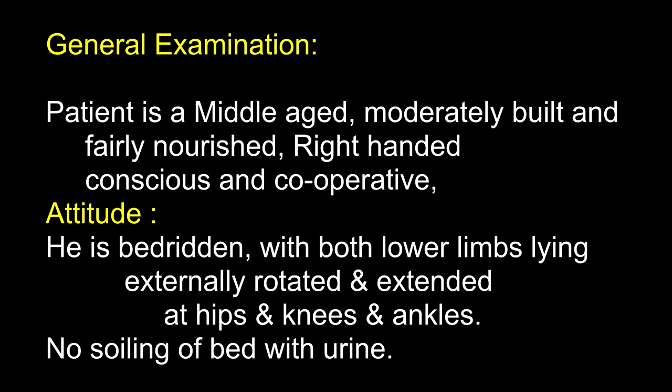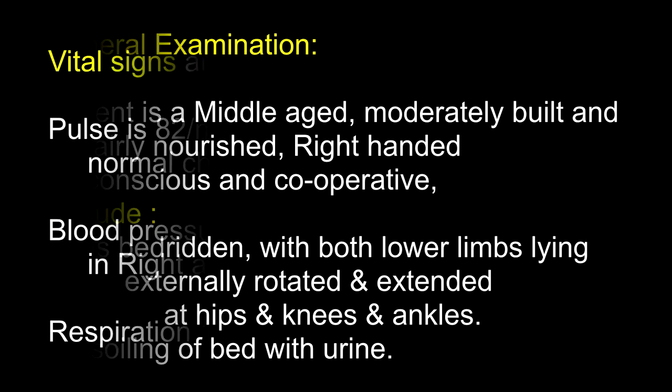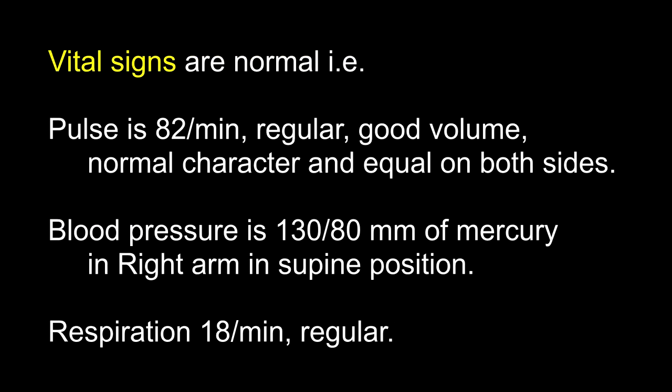There is no soiling of the bed with urine. Vital signs are normal: pulse is 82 per minute, regular, good volume, normal character and equal on both sides. Blood pressure is 130/80 mmHg in the right arm in supine position and respiration is 18 per minute, regular.